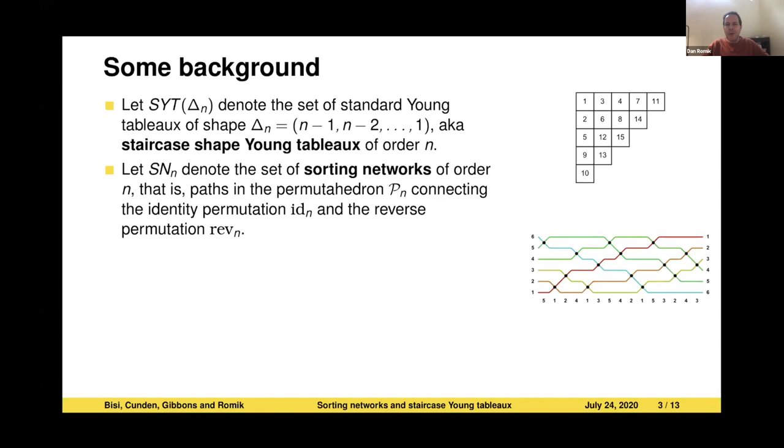The path on that graph can be described combinatorially as what we call sorting networks. A sorting network of order N is simply a path in the permutahedron connecting the identity permutation and the reverse permutation. You can graphically represent it here as a diagram called the wiring diagram. Here on the left, we have the identity permutation one, two, three, four, five, six. Then you start performing adjacent swaps. Those are represented by crosses in the diagram, until you get on the right hand side to the permutation six, five, four, three, two, one. This is a directed graph, so we can only go forward, meaning there has to be exactly N choose two swaps to make this happen.